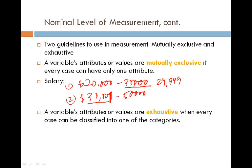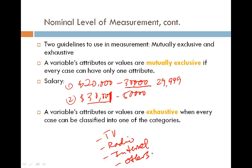The second principle is called exhaustive, which means every case can be classified into one of the categories. For example, if we ask how often people use media and list television, radio, and internet, that is not exhaustive — what about newspapers, print media, books, or magazines? To make the measurement exhaustive, we need to add an 'other' category. That 'other' option is very important for making measurement exhaustive.